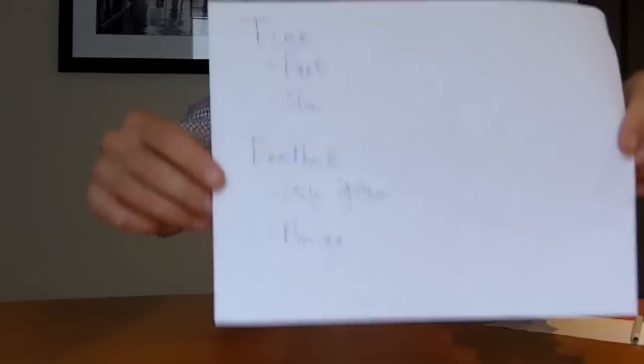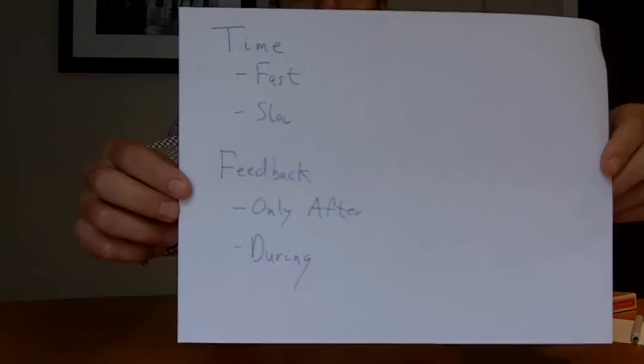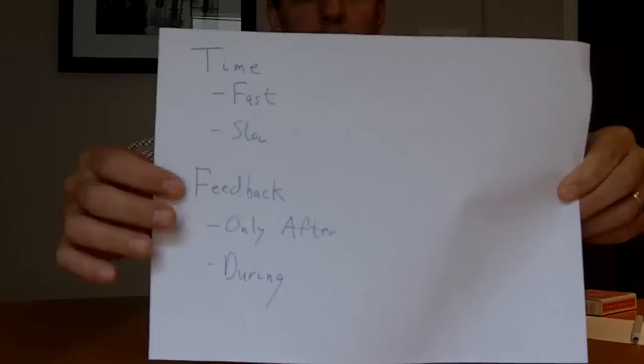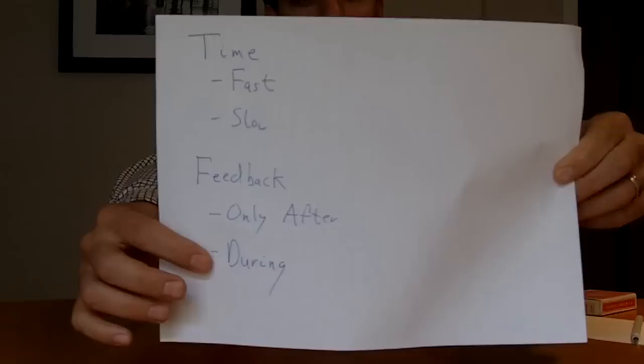The two key components we're looking at for open loop and closed loop systems are: time — is it done very fast or slow — and feedback — do we get feedback only after we've completed it, or can we get it during? One of the things I really wanted to highlight, because I noticed in the labs that people were a little unsure.